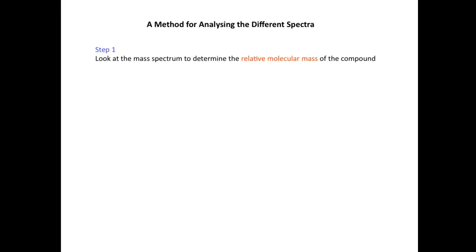The first thing we're going to look at is a method for analyzing the different types of spectra. In step one, we're going to look at the mass spectrum to help us determine the relative molecular mass of the unknown compound. In step two, we're going to use the infrared spectrum to help us identify functional groups that are present.